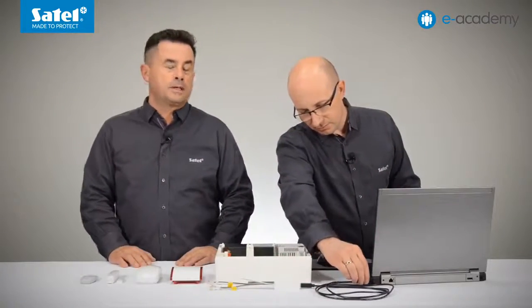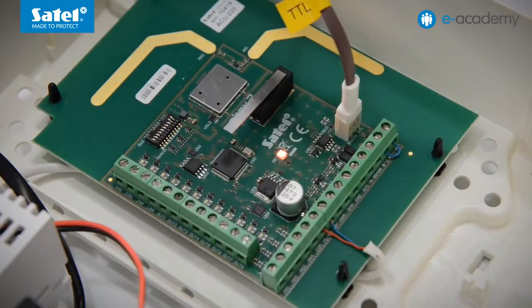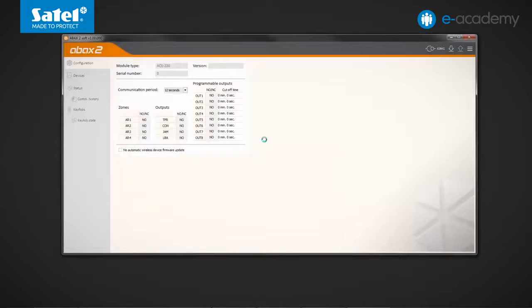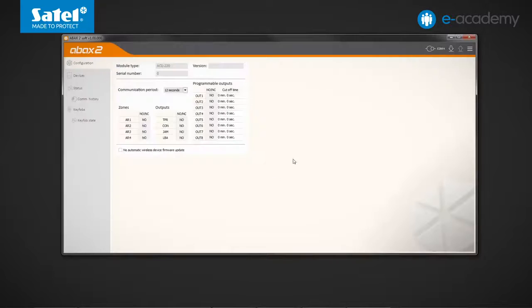Connect the USB RS converter to the computer and then to the RS232 TTL connector on the controller. Run the ABAX2 soft program. In the right part, click on the symbol of additional menu, select configuration. Indicate the RS232 port to which the USB RS converter is connected and click OK. Find the connect/disconnect icon. Clicking the icon will establish connection to the ACU220 module. In the upper part of the window, you can read the module type, serial number, and firmware version.